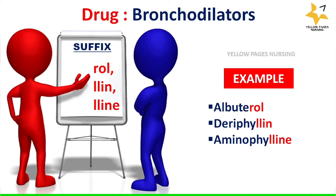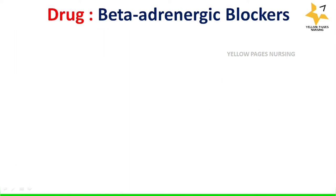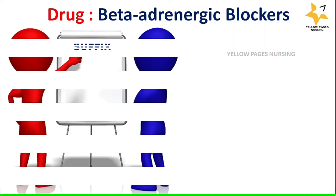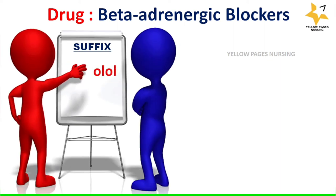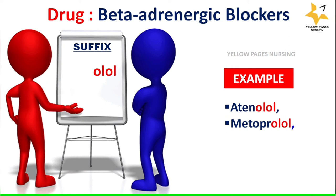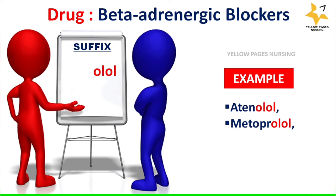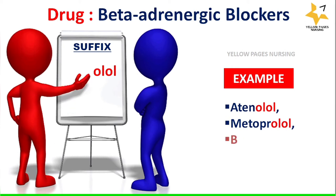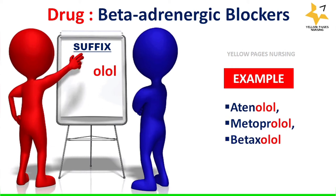Next comes the drug group beta-adrenergic blockers, which end with the suffix '-olol'. Examples are atenolol, metoprolol, betaxolol, etc.